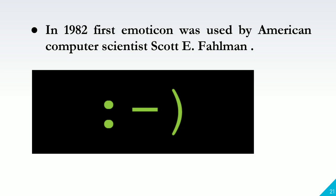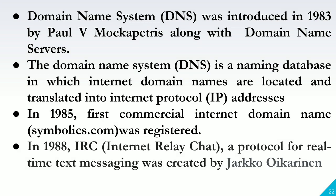In 1982, the first emoticon was used by American computer scientist Scott E. Fahlman. The word 'emoticon' comes from a contraction of 'emotional icon.' Although it has been claimed that the first emoticons appeared in 1979, the first substantiated use of an emoticon came from Scott Fahlman on September 19, 1982. While many people credit Kevin MacKenzie with the invention of emoticons in 1979, it was Scott Fahlman who proposed it for the first time to the public. The domain name system (DNS) was introduced in 1983 along with the first domain name servers, introduced by Paul V. Mockapetris.